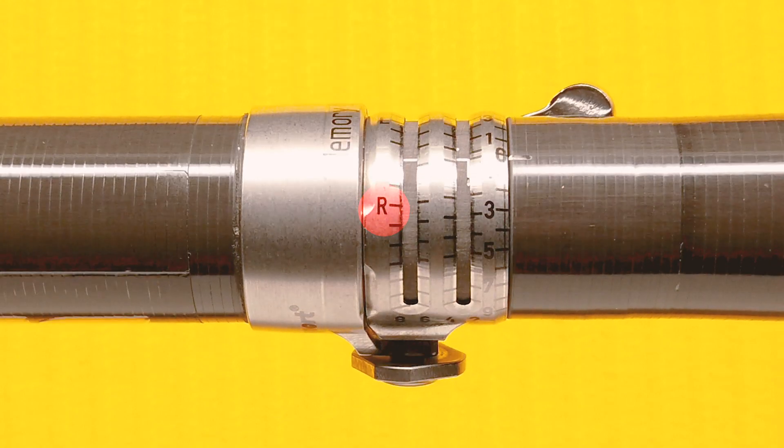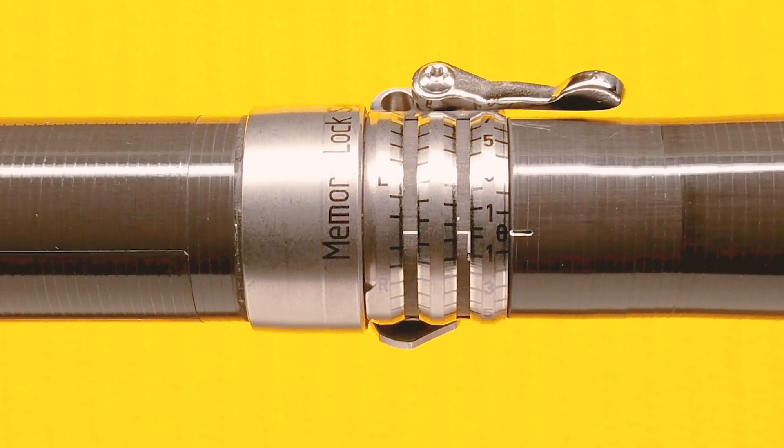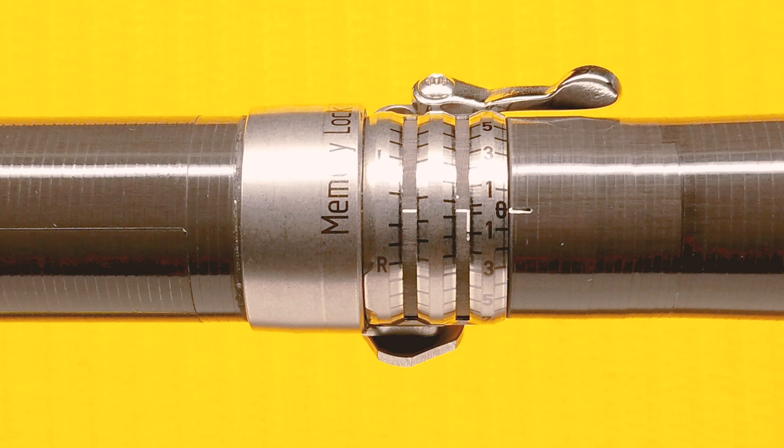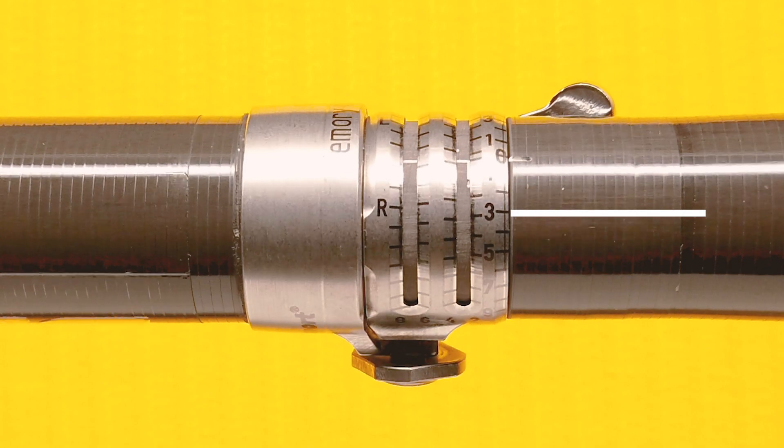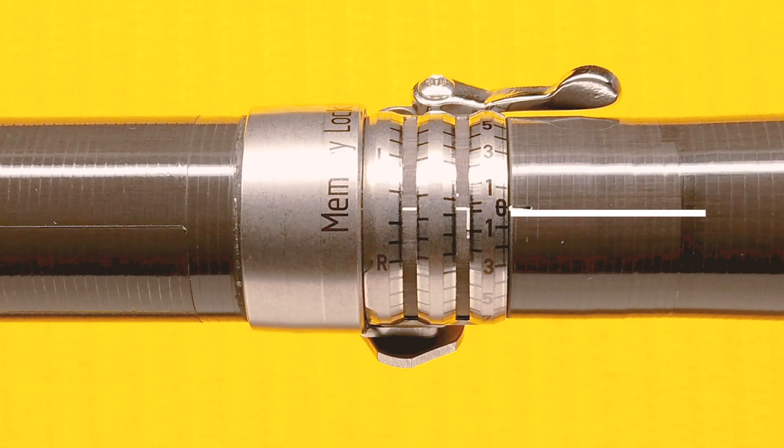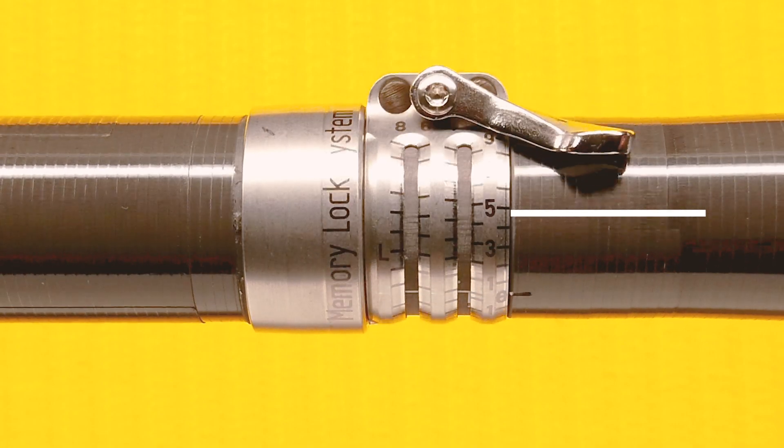Notice the letters R for right-handed and L for left-handed, depending on which hand you use to control the paddle. If you use your right hand to control the paddle, then you'll be twisting the white ruler downwards towards the R. If you use your left hand, you'll be twisting upwards towards the L.